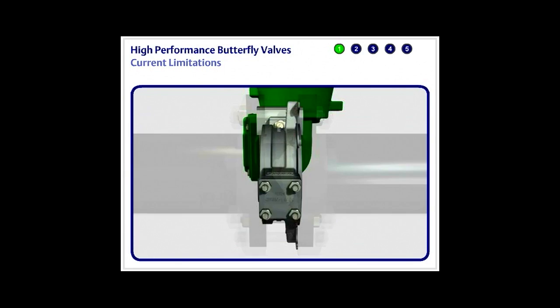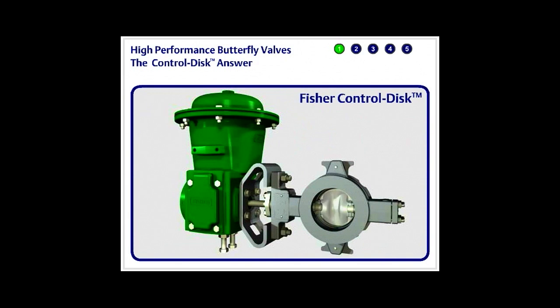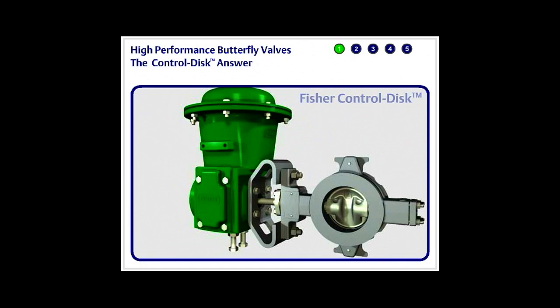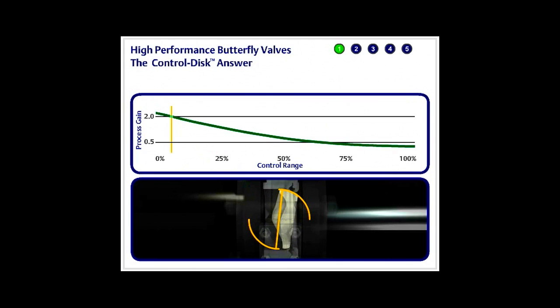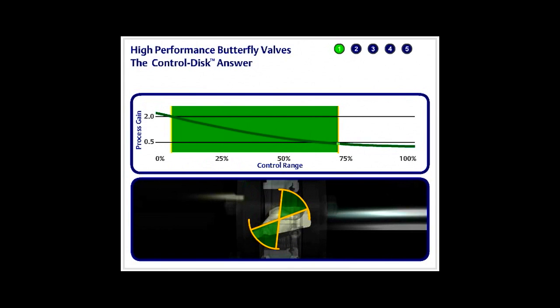Now there is an answer to this control range dilemma, the Fisher control disc. The control disc valve stretches the control range to begin at 10% open and extends the range to 70% travel. That's a 300% increase in application coverage.